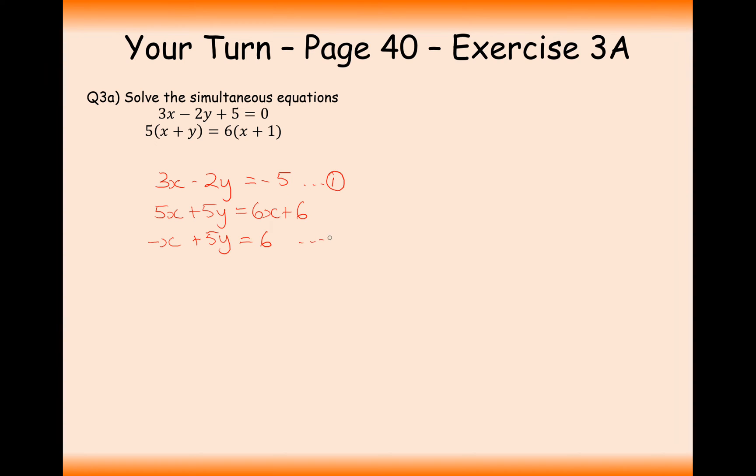What I can see here is if I multiply equation 2 by 3, then I'm going to get a 3x and a minus 3x. Equation 2 times 3, I'm going to get minus 3x, and remember I have to times the whole equation by that number 3, so 15y equals 18.